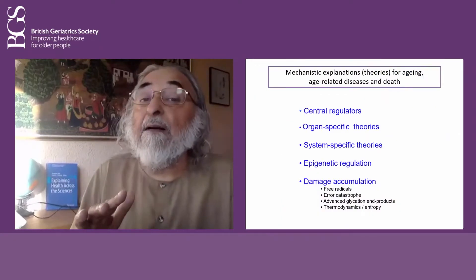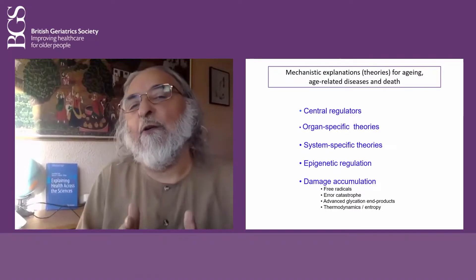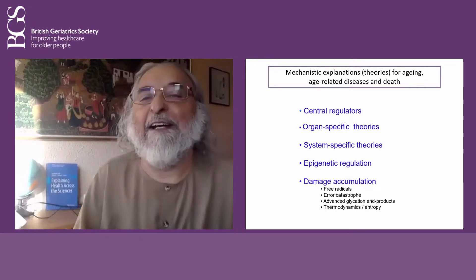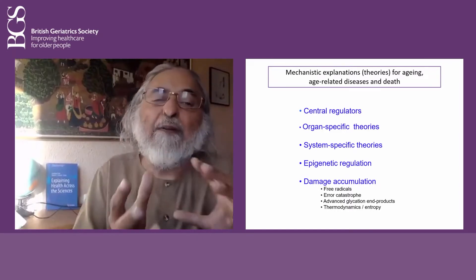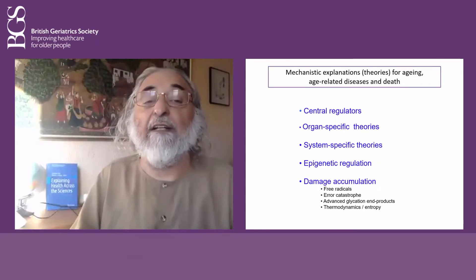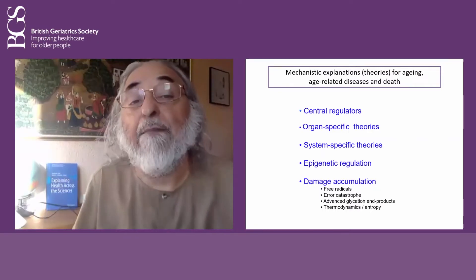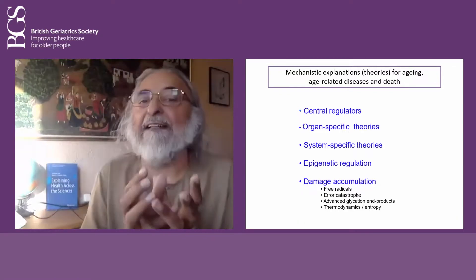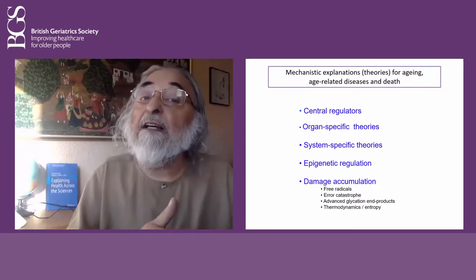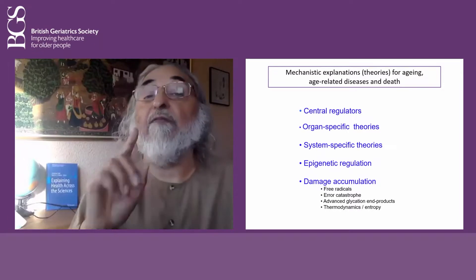There are also mechanistic explanations for what is causing aging. There used to be a period when we said there are as many theories of mechanisms of aging as there are people working in the field. One can still group them: some believe in central regulators or organ-specific theories like the pineal gland or immune system controlling aging; or epigenetic regulation, these days very popular; or damage accumulation from basic metabolism and its consequences.